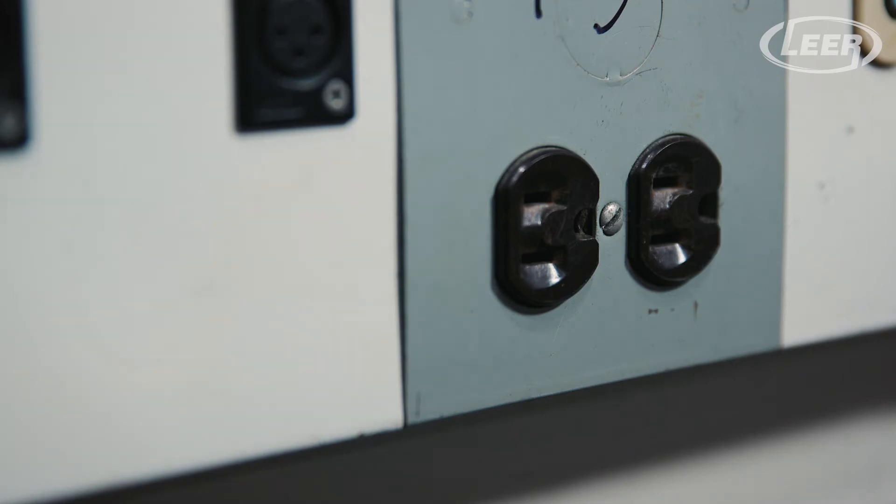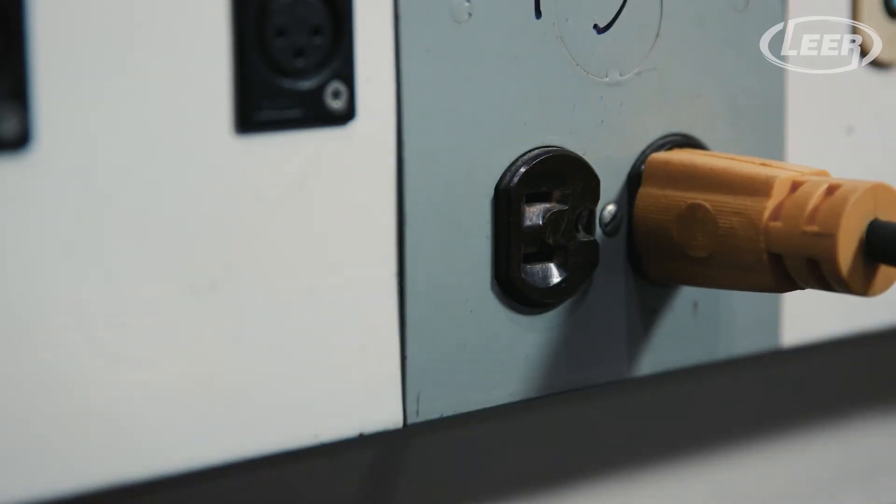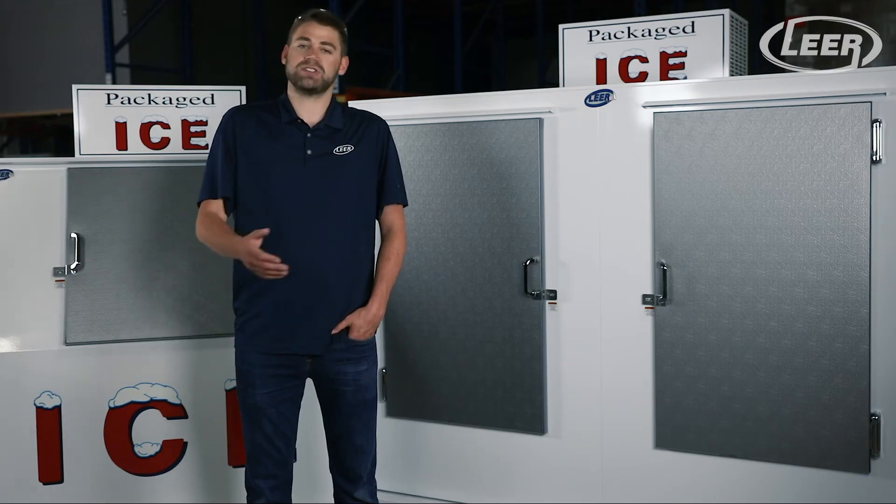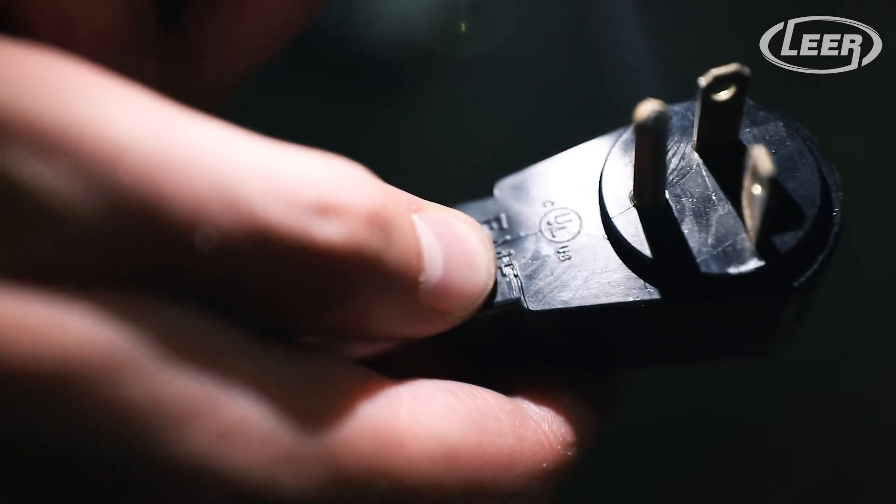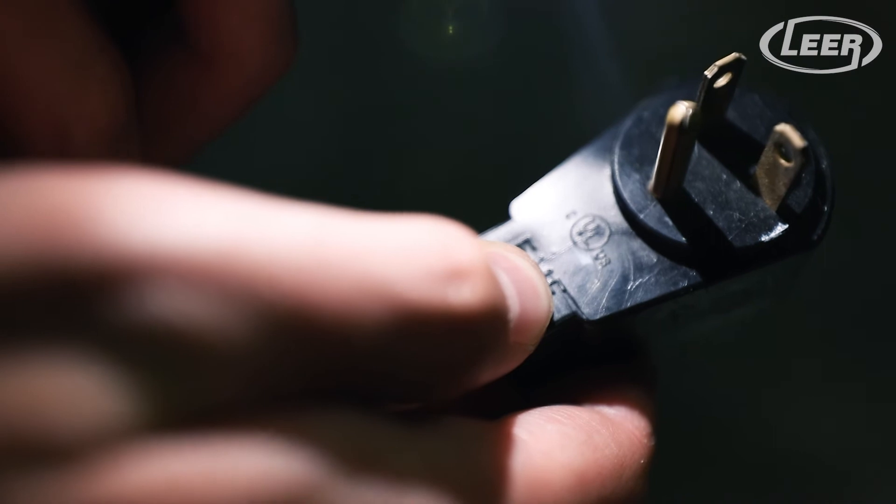The merchandiser requires a 115-volt single-phase outlet. The amp draw ranges between 6 and 13 depending on size and cold wall versus auto defrost. UL certification requires all models larger than the model 100 to use a 20-amp plug.